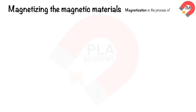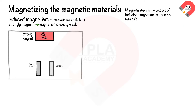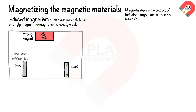Magnetizing magnetic materials: magnetization is the process of inducing magnetism in magnetic materials. There are three ways to magnetize a material. The first is induced magnetism — iron and steel can be magnetized when placed near a strong magnet, though its magnetism is usually weak. When an iron bar and a steel bar are brought close to the north pole of a strong magnet, both are magnetized. The ends near the north pole become south poles, and the other ends become north poles. When removed from the magnet, the iron loses its magnetism while the steel remains permanently magnetized.